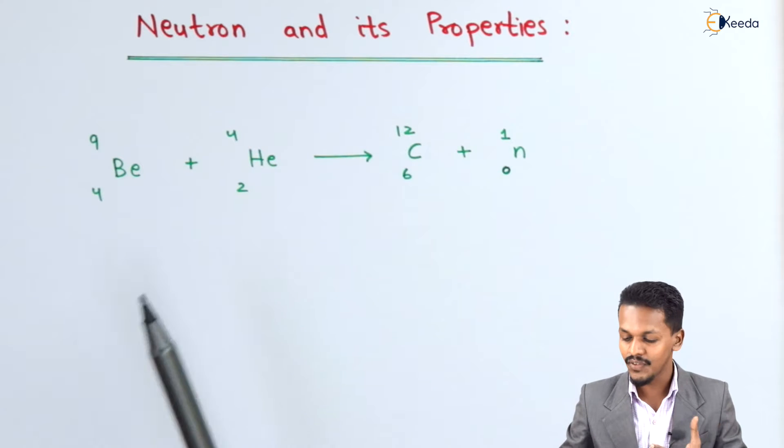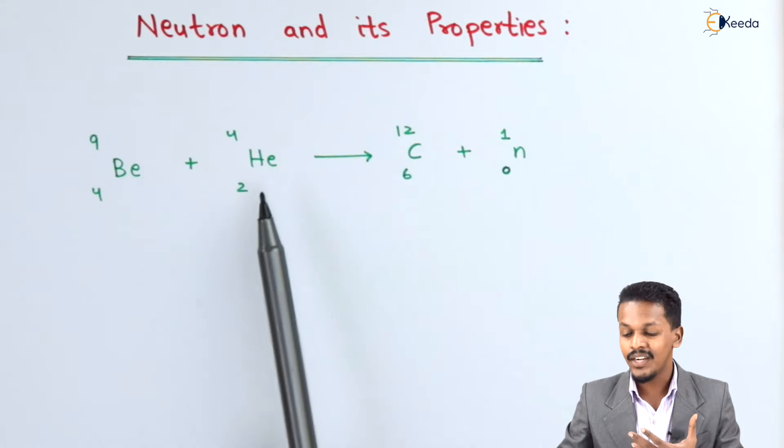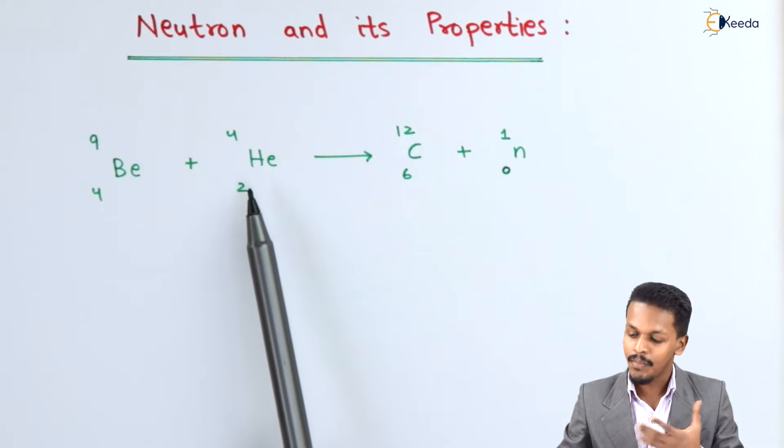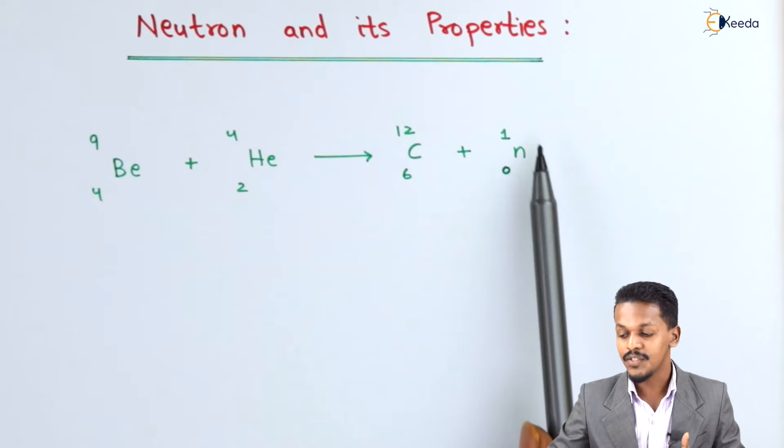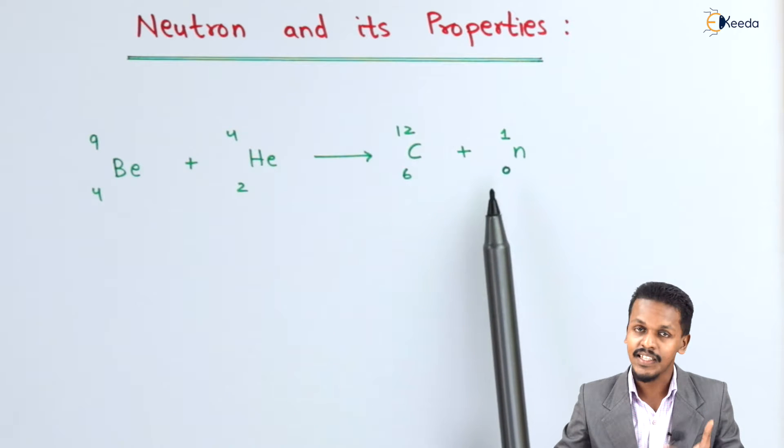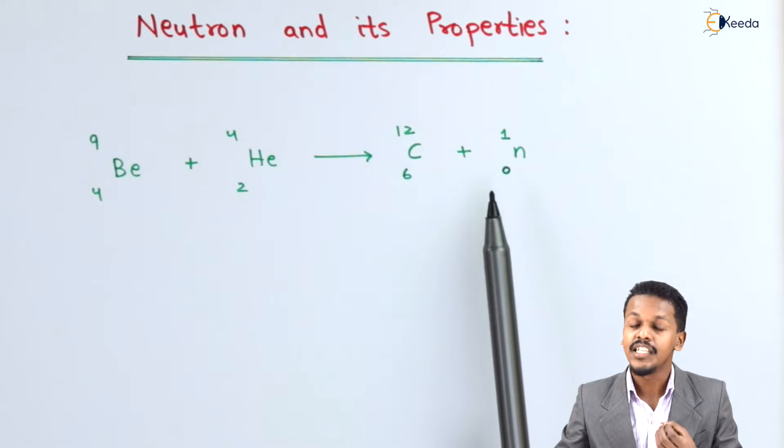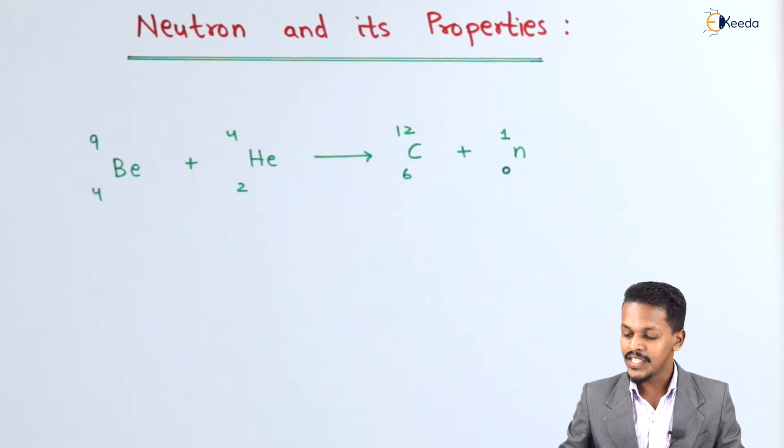This is basically a transmutation reaction where beryllium is bombarded with high velocity helium to form carbon along with a small particle—a neutron having zero charge. This is one example. Now let us discuss the properties of the neutron.